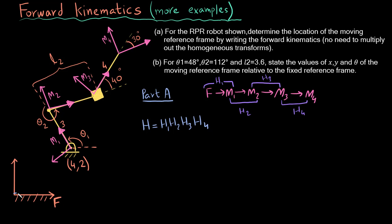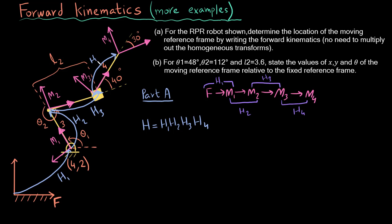H1 takes the fixed frame to M1, H2 takes M1 to M2, H3 takes M2 to M3, and H4 takes M3 to M4. I hope the diagram isn't too messy to understand.